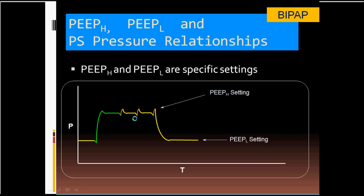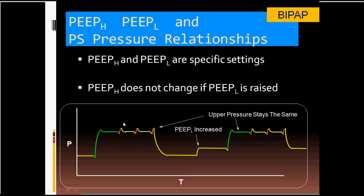Since it is a high CPAP and low CPAP, the patient can take spontaneous breaths at the higher level and also at the lower level. When you raise the lower CPAP while the higher CPAP remains the same, the driving pressure decreases and accordingly the tidal volume decreases. The patient breathes spontaneously at the higher level and also takes spontaneous breathing at the lower level without triggering — there is no triggering here.